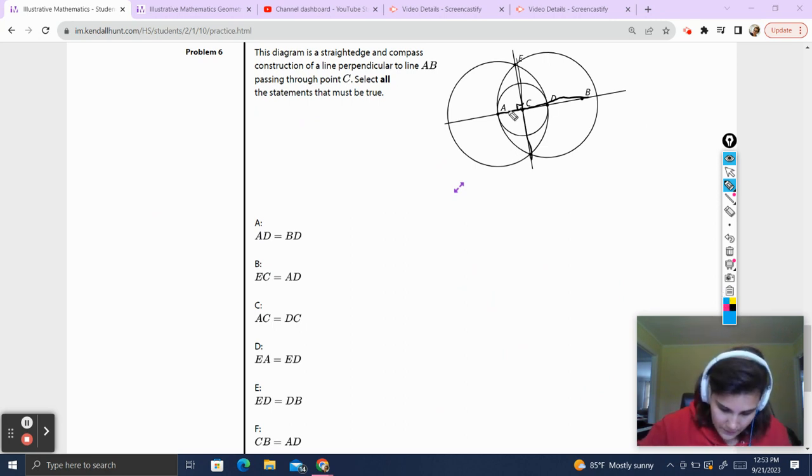Is AD equal to BD? We don't know if this is a perfect bisector. AD, is that equal to BD? So, no. We cannot assume it to be true. Is EC equal to AD? We don't know anything about the length of EC, so no.